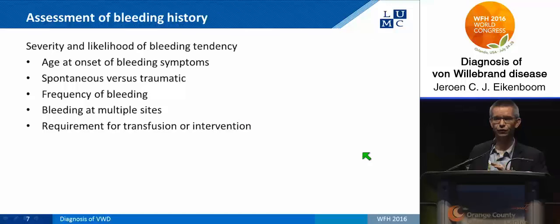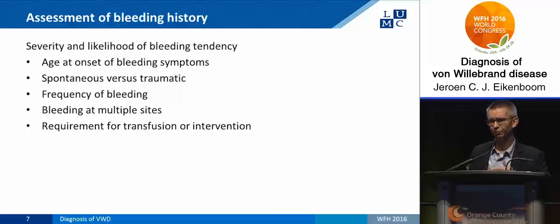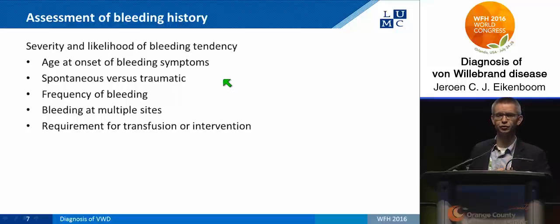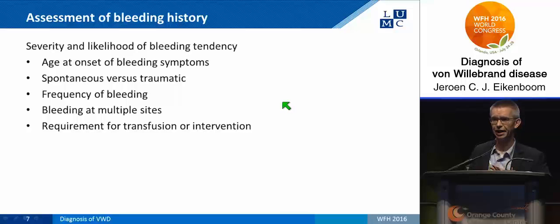We first have to focus on how to assess the bleeding history, and for that we assess the severity and the likelihood of a bleeding tendency, characterized by the age of onset. The younger the age at first symptoms, the more likely there is a bleeding tendency. This is also true for spontaneous versus traumatic bleeding, the frequency of bleeding, and whether there are bleeds at multiple sites — all of which make a bleeding history more likely.